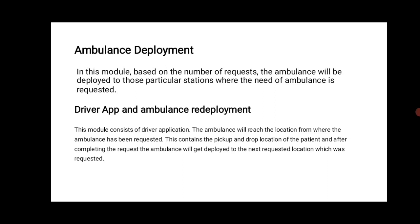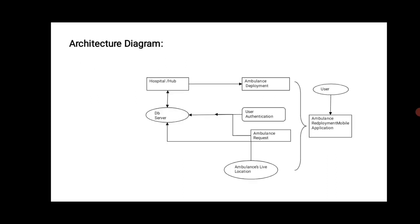Here is the architecture diagram of the proposed project. The DB server works as a master client server. From the server, information is given to the hospital hub and the client. From the hospital hub, it gives information to the ambulance deployment. For the client, user authentication and ambulance request will be sent, and the ambulance live location will be shared.